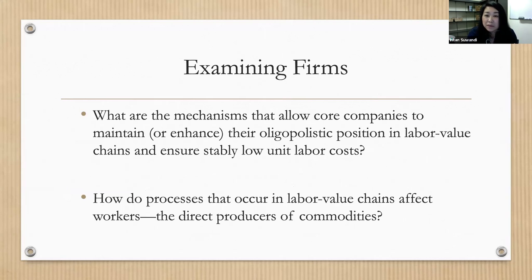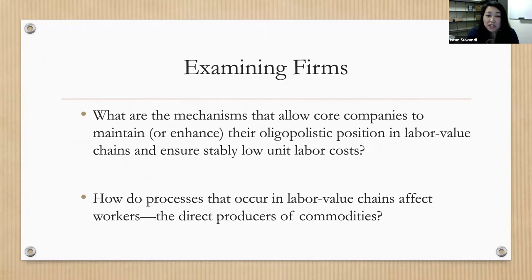It's important to examine firms at the meso level to understand exactly how these mechanisms realize production. My questions are: what are the mechanisms that allow core companies to maintain or enhance their oligopolistic position in labor value chains and ensure stably low unit labor costs? And how do processes that occur in labor value chains affect workers — the direct producers of commodities?